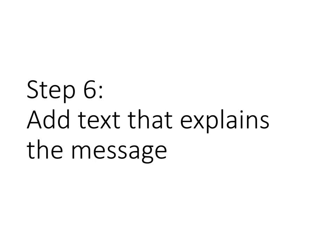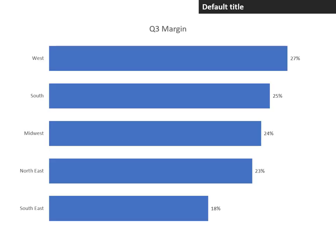Step six: add text that explains the message. By default, the title is simply drawn from the series name. What we want to do is add a message title — a title that indicates to the audience what it is that they're supposed to understand from this particular bar chart.